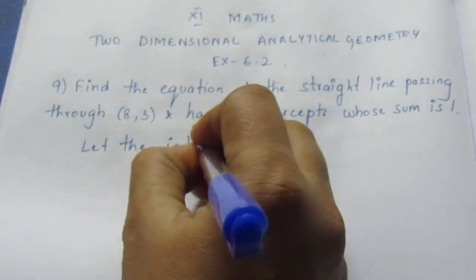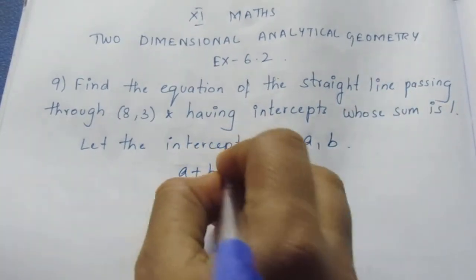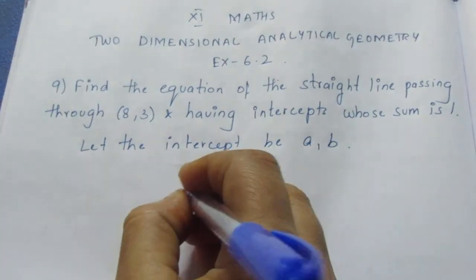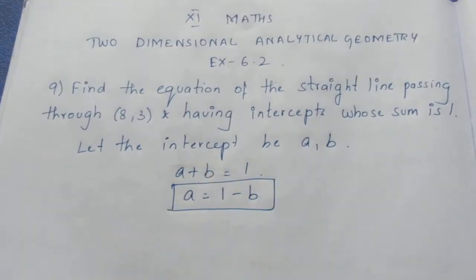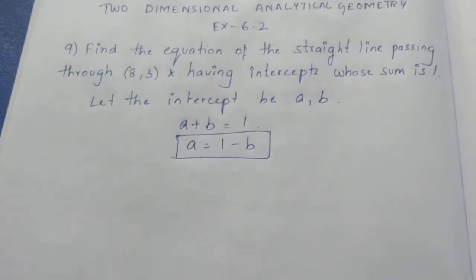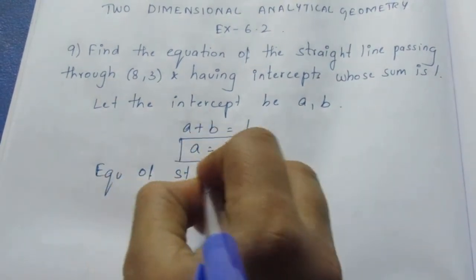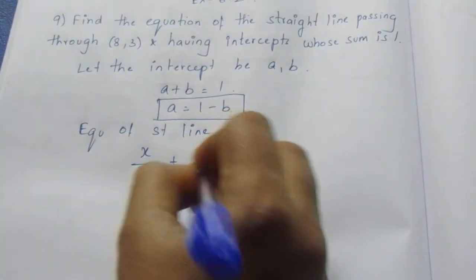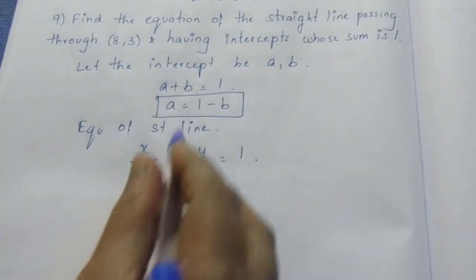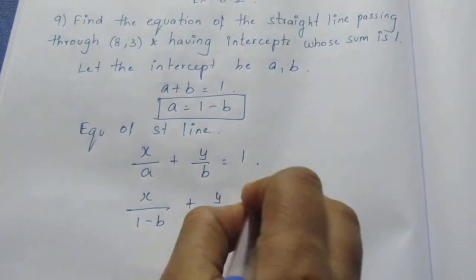Let the intercepts be a and b, and a plus b equal to 1. So a is equal to 1 minus b. In order to write the equation of a straight line, we use the intercept form: x by a plus y by b equal to 1. Substituting a, we get x by (1 minus b) plus y by b equal to 1.